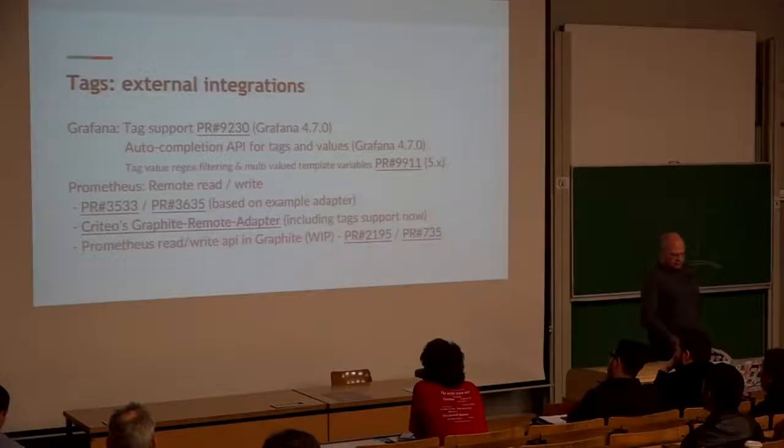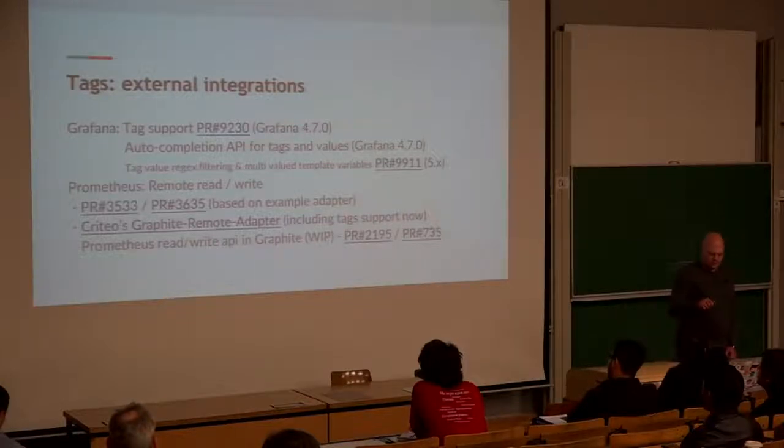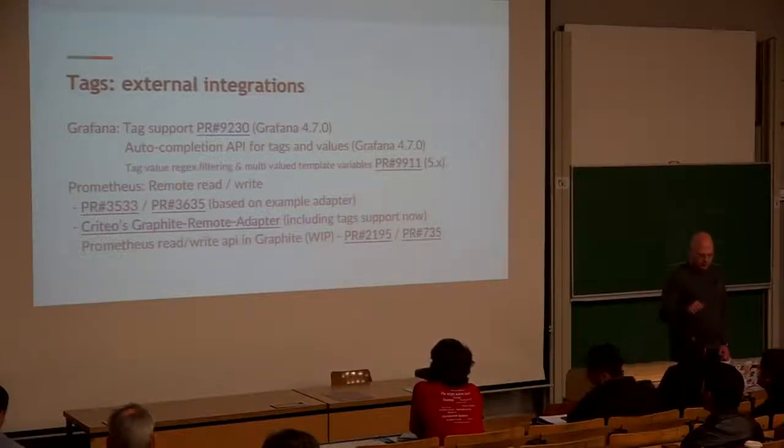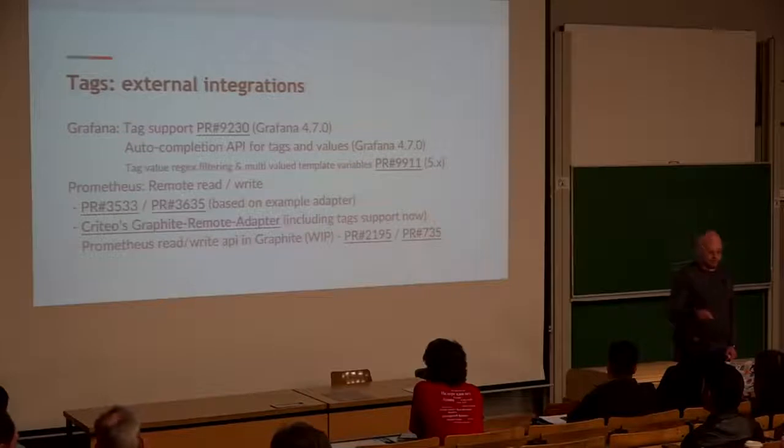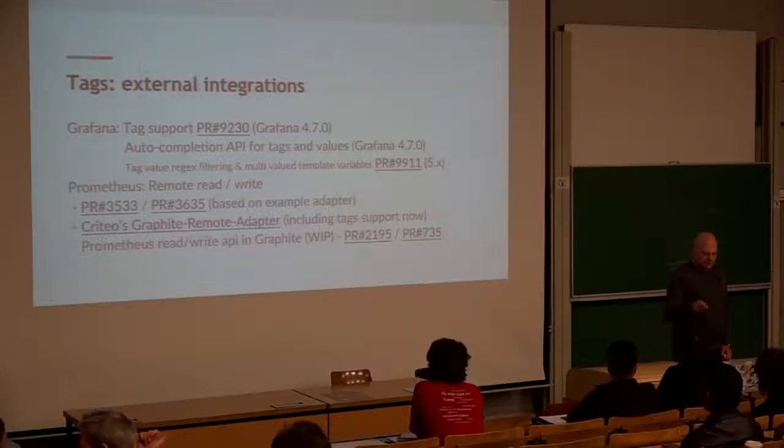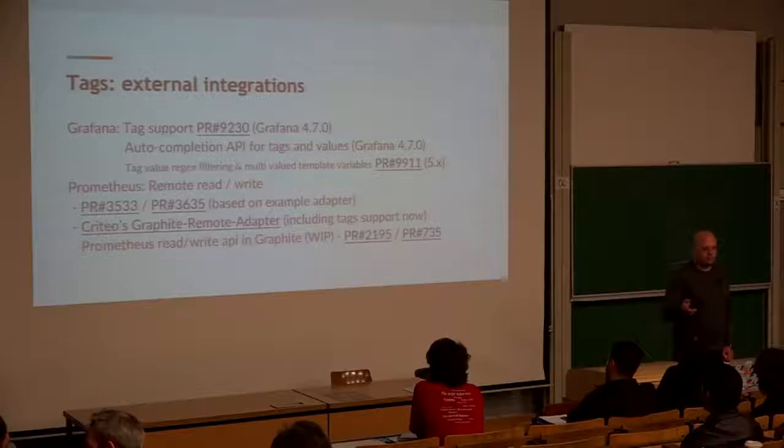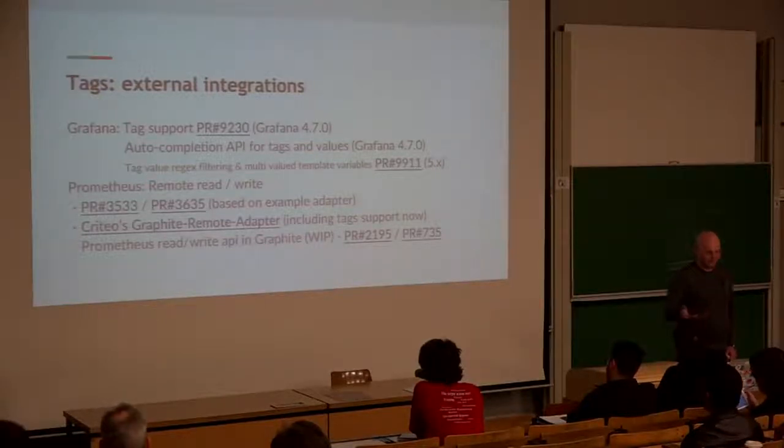Integrations in Grafana 4.7 and 5 - there will be support for tags, including auto-completion for tags and values, because we have an API for auto-completion now. Also, for Prometheus, you can use Graphite 1.1 as remote storage. And Prometheus, of course, uses tags, so we are now also storing these tags in Graphite.